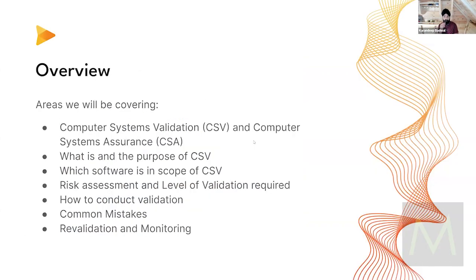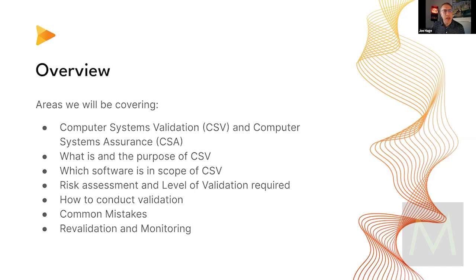In terms of an overview, we're going to be talking about computer software validation and computer systems assurance. The FDA recently had some guidance that came about on CSA. We'll talk about the difference between the two. We're also going to be covering what is the purpose of CSV, why we do it and why it's important. Another important one is which software is in scope of your computer software validation — how do you determine whether a software needs to be validated and the level to which it needs to be done.